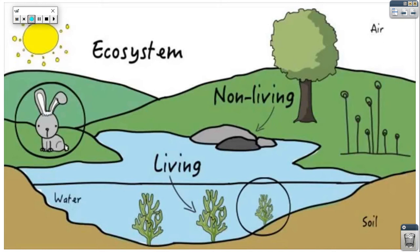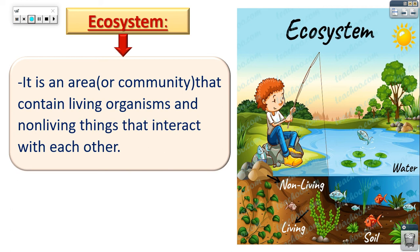The ecosystem consists of animals and plants, which are living organisms. This picture also contains water, soil, sun, and air. So it also contains non-living things like water, soil, sun, and air. The ecosystem is an area that contains living organisms and non-living things, and there is interaction between them.